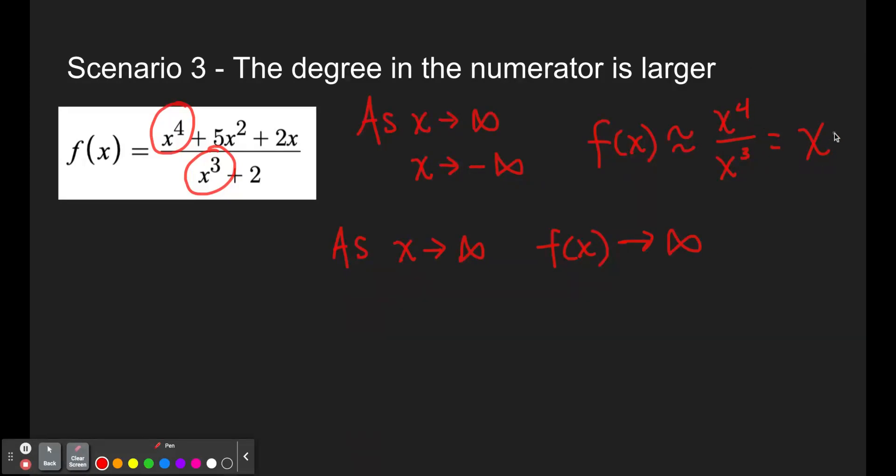If you think about it, even before we just simplified to x, the number in the numerator is going to be so much bigger than the number in the denominator. If you have infinity to the fourth power, that's still going to be infinity even if you get rid of three of those infinities.